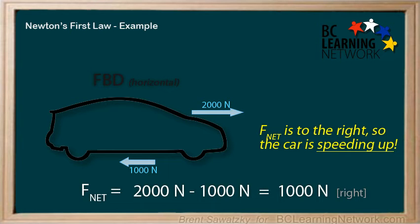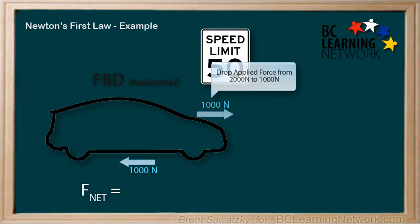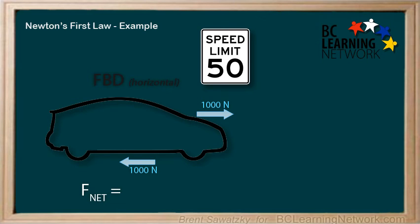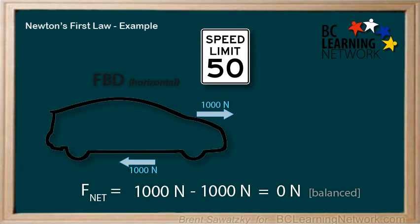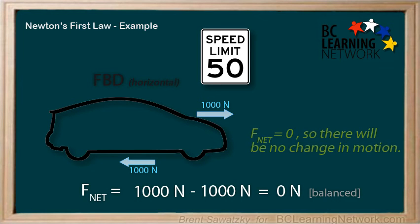Now we're cruising along down the road, and once we get close to the speed limit, we back off on the gas pedal, so the applied force drops down. You're already at the speed you want, so you no longer need to change the car's motion. You just want to keep going at 50 kilometers per hour. Therefore, the applied force must equal the friction force. The F-Net is 1,000 Newtons minus 1,000 Newtons, giving a net force of 0. The forces are balanced, and according to Newton's first law, our car will continue at the same motion — 50 kilometers per hour straight down the road — as long as we keep that F-Net at 0.